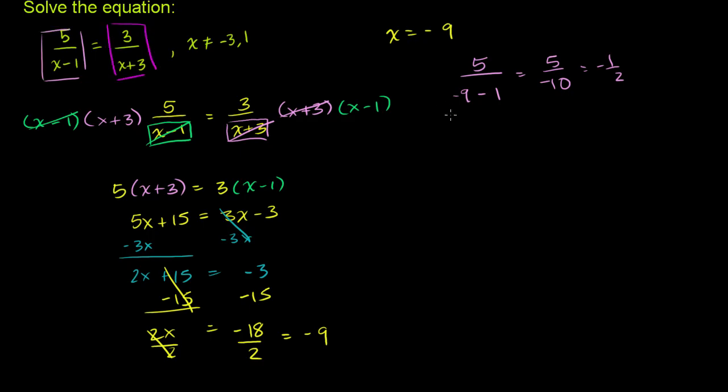Now what happens when I substitute it into the right-hand side of the equation? 3 over negative 9 plus 3 is equal to 3 over negative 6, which is equal to negative 1 half. So the left-hand side does equal the right-hand side when x is equal to negative 9.